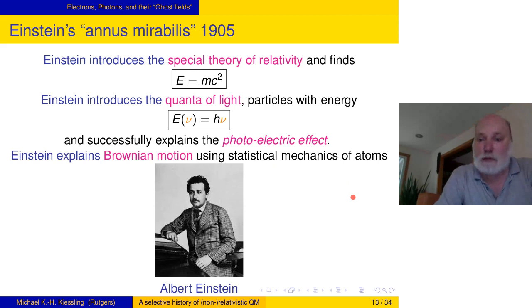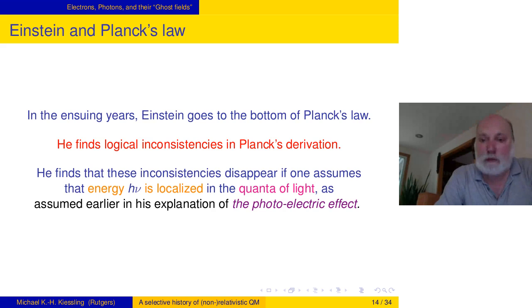He uses this idea to explain the photoelectric effect successfully. And he also explains Brownian motion using statistical mechanics of atoms, computes the size of the atoms. From then on, the physicists start taking atoms more seriously. Einstein also keeps hacking away at Planck's law. He discovers that there are logical inconsistencies in Planck's derivation. And he finds that these inconsistencies can be made to disappear if one really assumes that energy is localized in quanta of light, exactly as he assumed in the photoelectric effect. By the way, Planck never liked that idea. When he got Einstein to move to Berlin, he introduced Einstein to the academy by referring to his idea of the quantum of light as a sin of his youth. Planck is ironically often called the inventor of the photon.